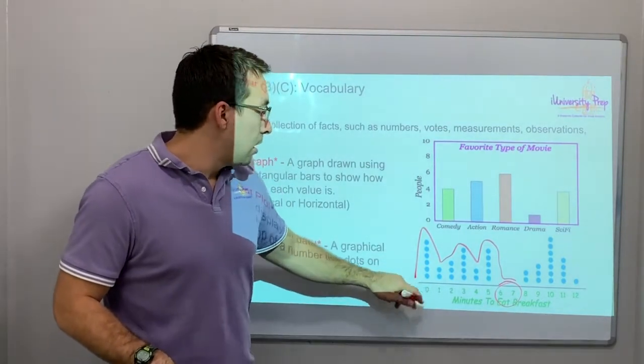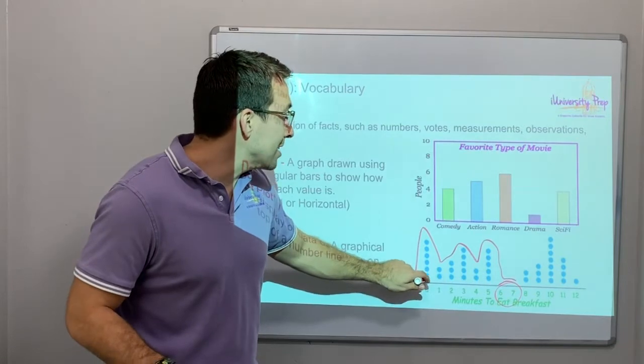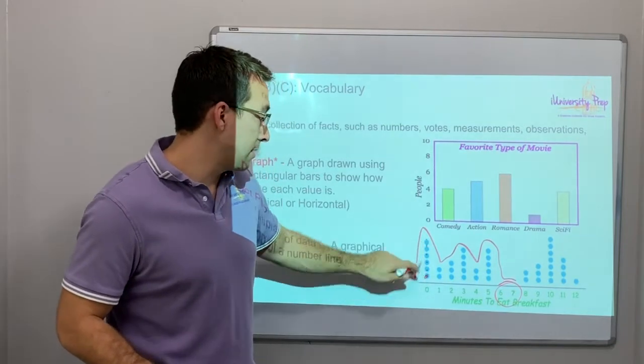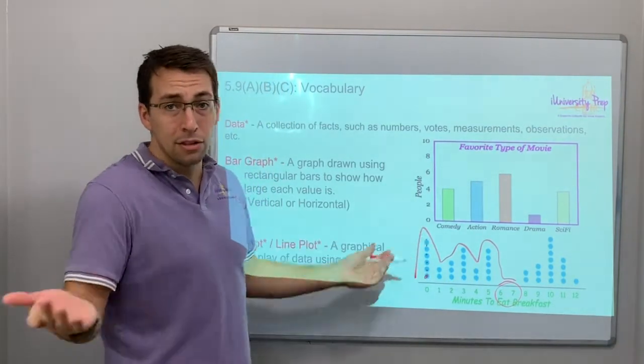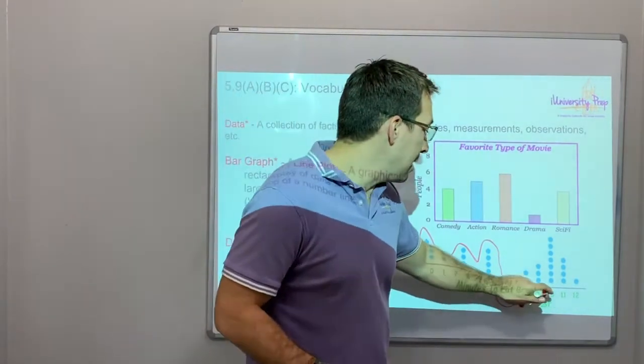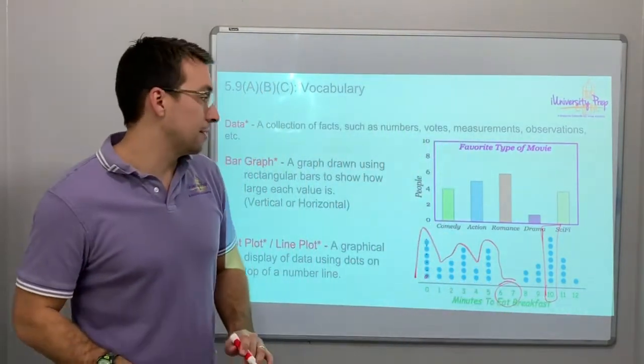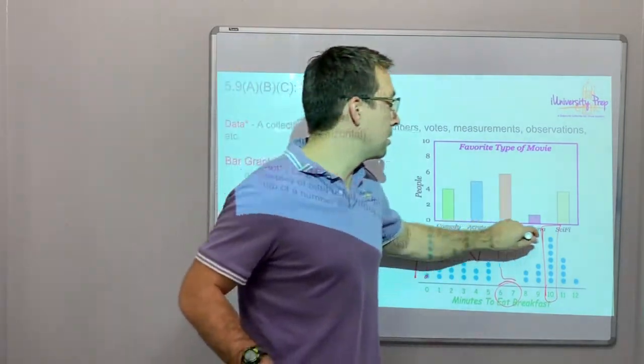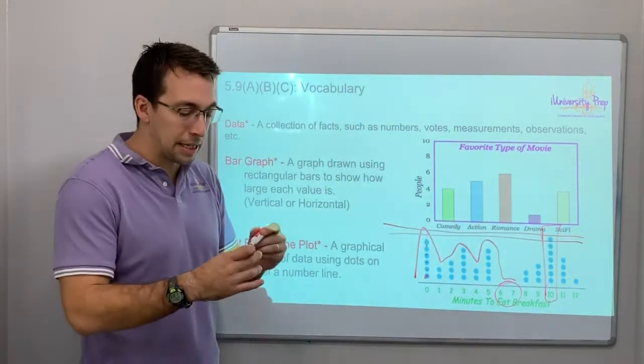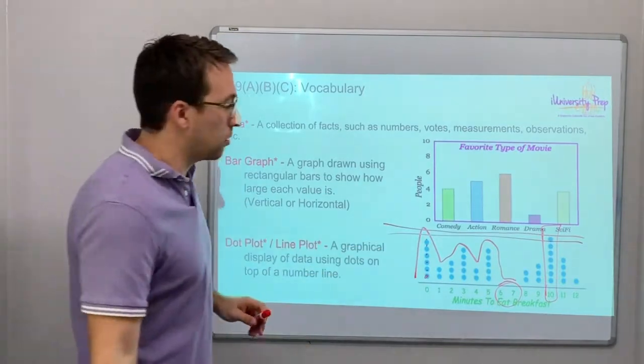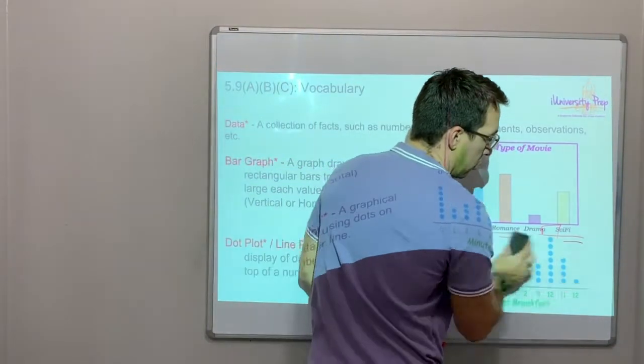Lots of people don't eat breakfast, and if you take zero minutes to eat breakfast that means you're not eating breakfast. Ten. Most people take 10 minutes to eat breakfast. Isn't that interesting? So anyway, that's how you read a dot plot or a line plot. It's just good for a quick visualization of a set of data.